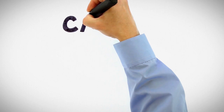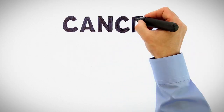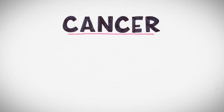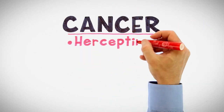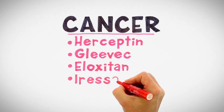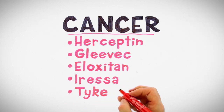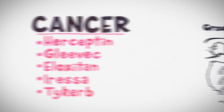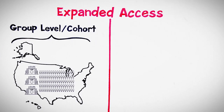Similar numbers of patients — those who were not good subjects for cancer research — were treated with breakthrough targeted drugs like Gleevec, Iressa, and Ticurb through expanded access. When we have a class of patients with the same medical condition, we're always talking about cohort expanded access.